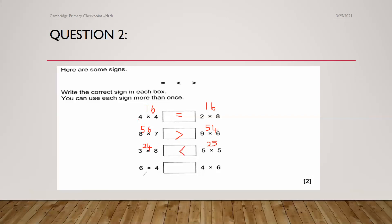Next: 6 times 4 is 24 and 4 times 6 also gives 24, so you can use the equal sign. For question number 2, if you get the correct 4 signs, you will get 2 marks. Make sure that if you get a question like this, first you multiply and get your value, then you try to use the correct sign.